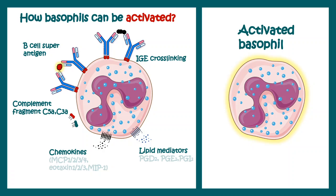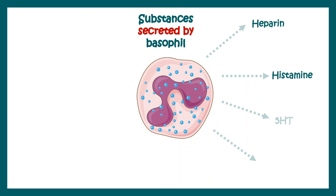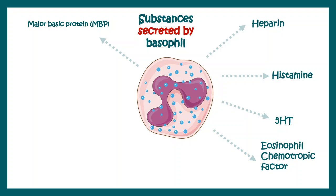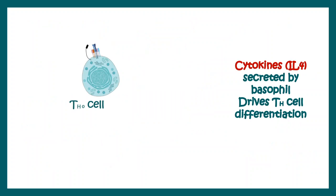Once activated, they are known as activated basophils, and these activated basophils secrete several molecules. Among the most important molecules secreted are heparin, histamine, 5-HT, eosinophil chemotactic factor, major basic protein, tryptase, chondroitin sulfate, CLP, and several interleukins such as IL-3, IL-4, and IL-13.